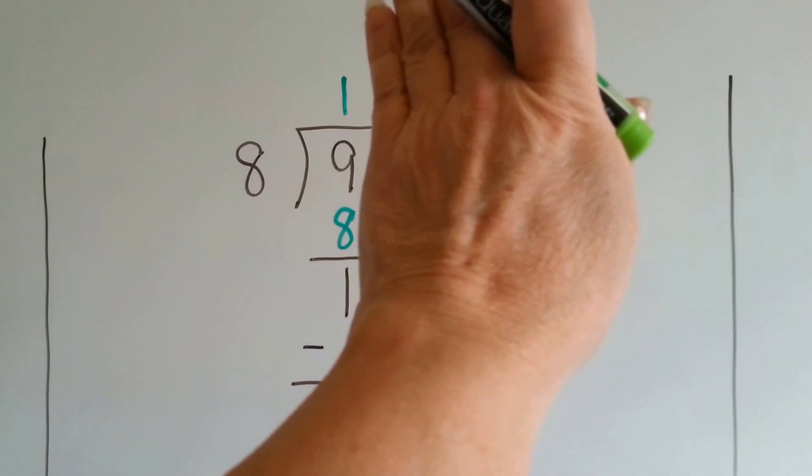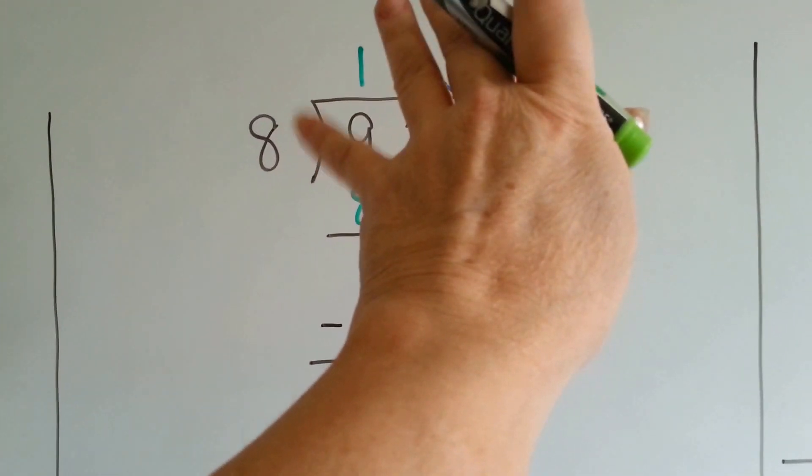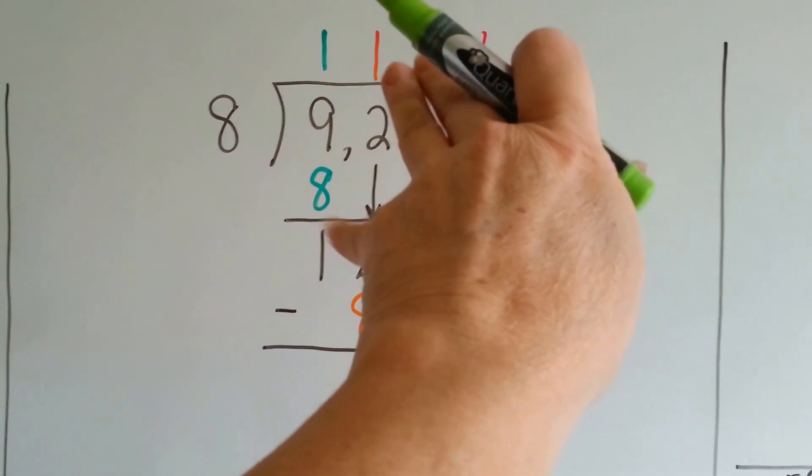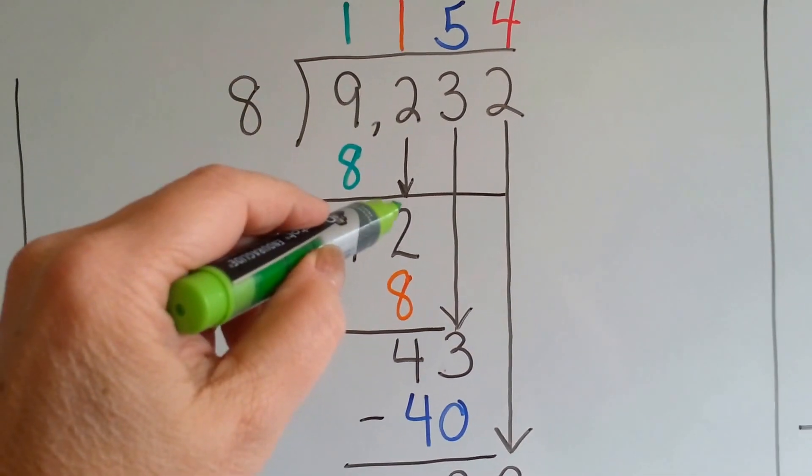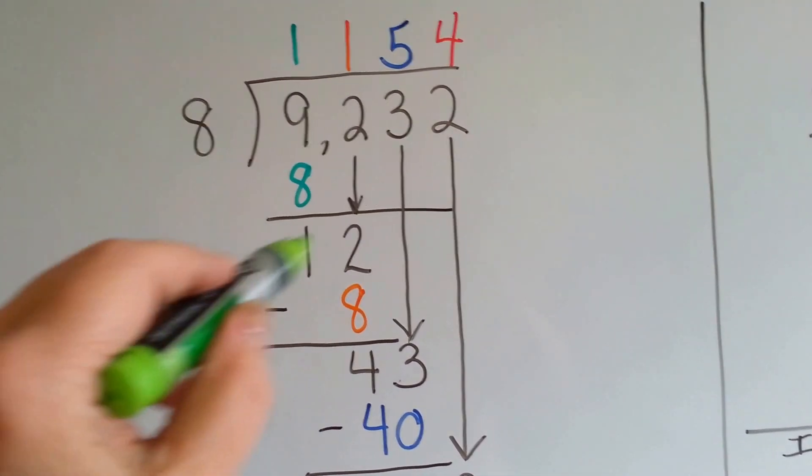We ask ourselves, how many times can 8 fit into the 9? It fits one time. 1 times that 8 is 8. And we write it down there, and we do our subtraction, and we get 1 right there. Now it's the 2's turn to come down. How many times can 8 fit into a 12? Just one time.